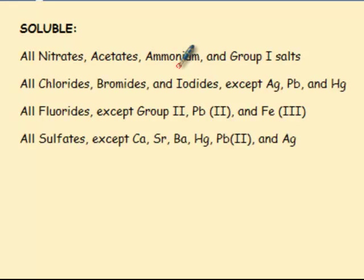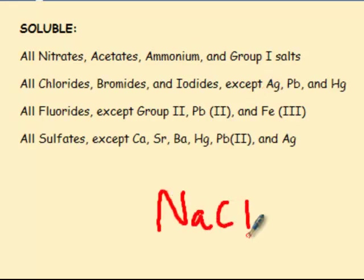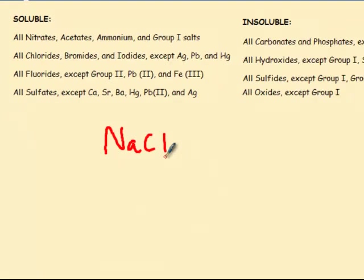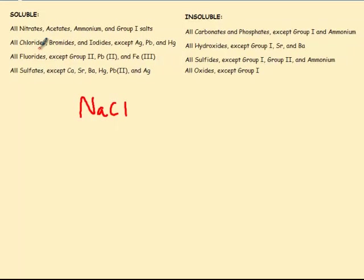Sulfates are also on the soluble list. Now if something is soluble, you can see there are some exceptions. So if it's soluble but there's an exception, that would make it insoluble. For example, NaCl is a chloride. All chlorides are soluble except silver, lead, and mercury — and this is sodium, so NaCl will dissolve in water.